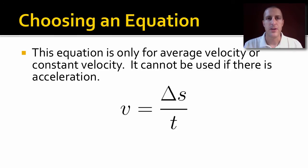Now, how do we choose which amigo to use? Well, one of the vice assistant amigos, V equals delta S over T, that one is only used when we're talking about average velocity or constant velocity because it does not have acceleration in there anywhere. So you can't use it any time you have acceleration.